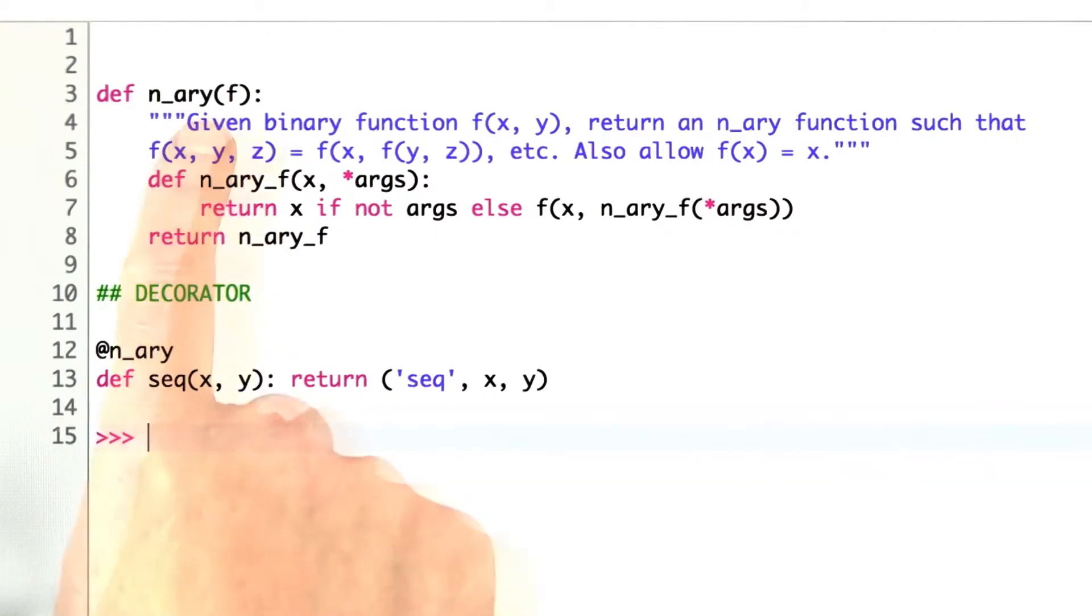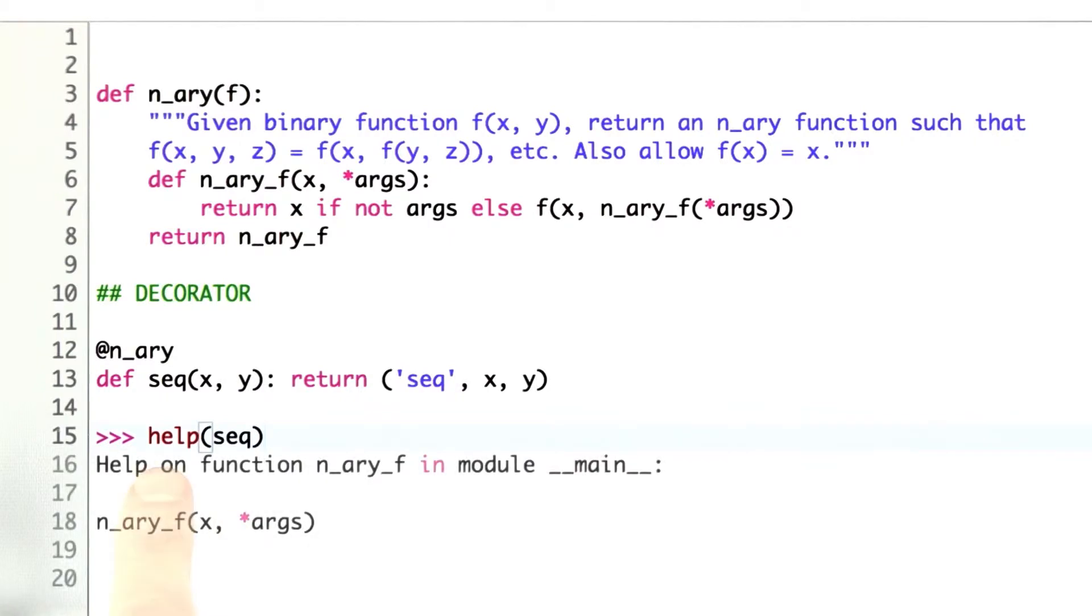But there is one problem with the way we've specified this particular decorator, which is if I'm in an interactive session and I ask for help on sequence, I would like to see the argument list, and if there's a doc string, I want to see the documentation here. I didn't happen to put in any documentation for sequence. But when I ask for help, what I get is this.